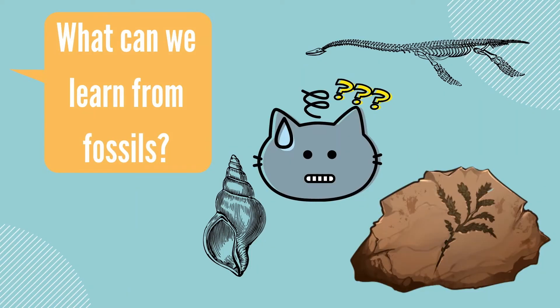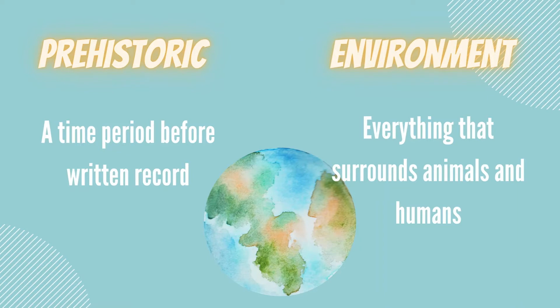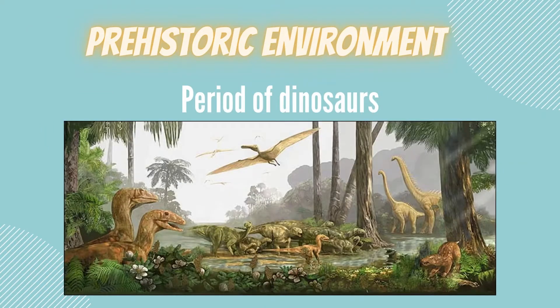It's clear that fossils are cool, but what else can we learn from them? We can learn about prehistoric environments. Let's break down these two words. Prehistoric simply means a time period before a written record, meaning before humans were alive. Environment is everything that surrounds animals and humans. An example of a prehistoric environment would be the period of dinosaurs that happened millions of years ago.